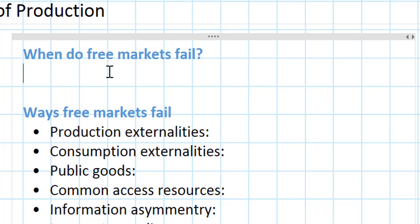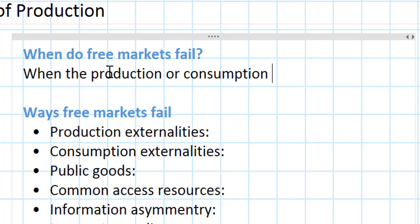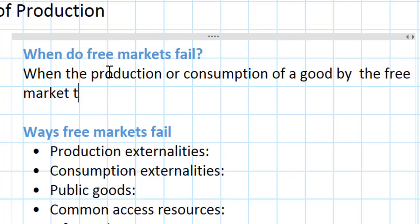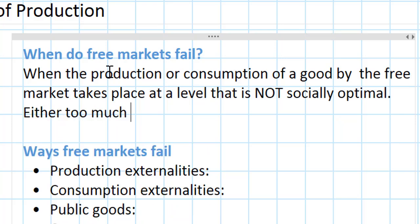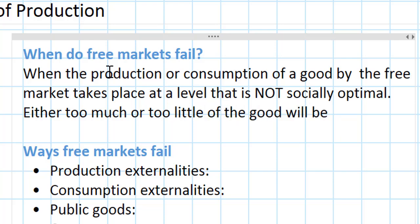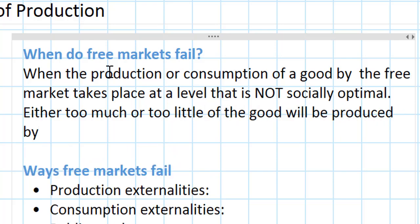Well, that brings us to the situation in which the free market fails. A market failure exists when the production or consumption of a good by the free market takes place at a level that is not socially optimal. Another way of saying this is that either too much or too little of the good will be produced by the free market.